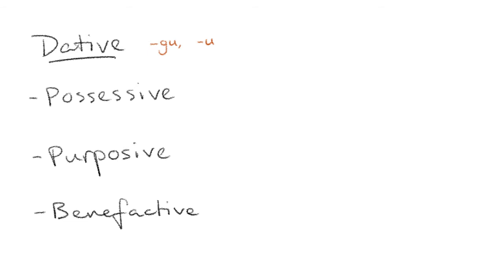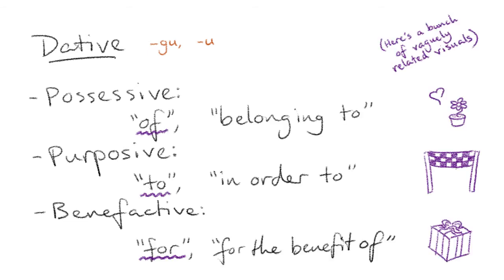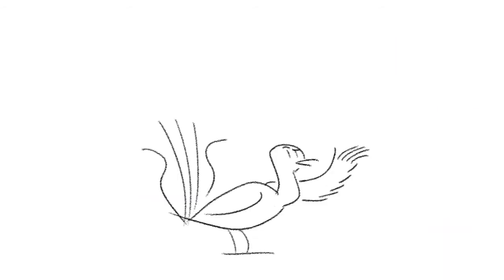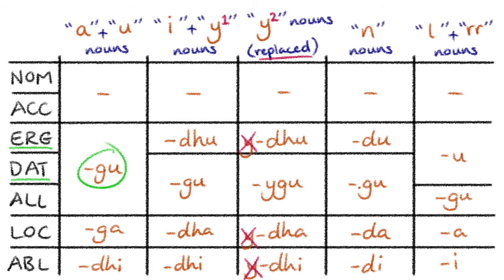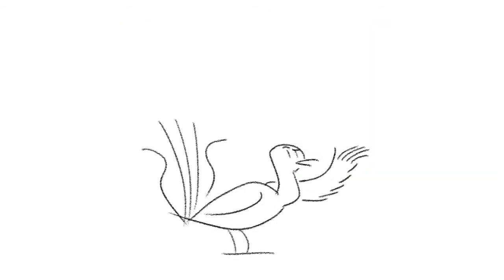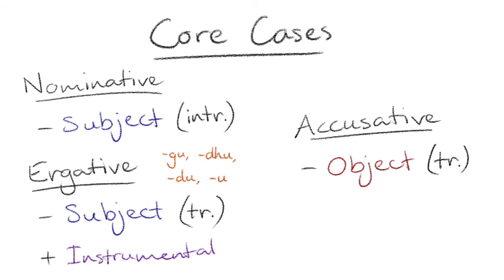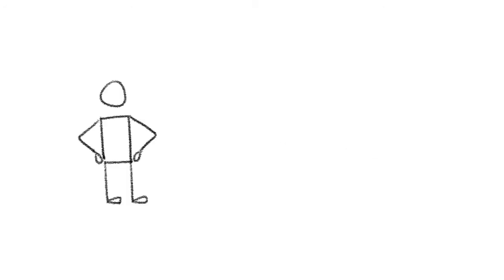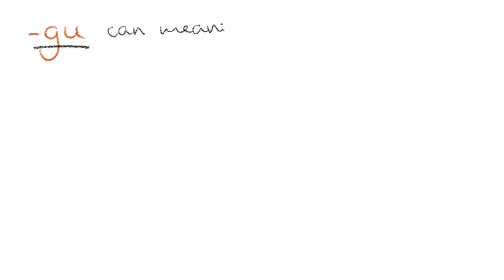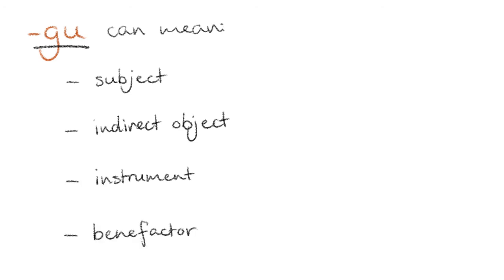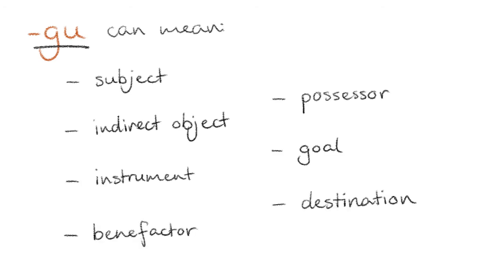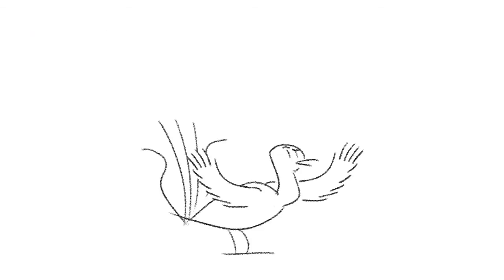The dative basically encompasses the meaning of the English prepositions 'of', 'to', or 'for', depending on context. It becomes even more context-dependent if the word in question has the same form for the dative, the ergative, and the allative case. In fact, there's quite a lot of overlap between those three cases — I wouldn't be surprised if they were all considered the same thing at one point in history. On top of that, the ergative also functions as an instrumental, which makes sense since both the subject and the instrument cause the action to occur. So a word ending in GU could be the subject, indirect object, instrument, benefactor, possessor, goal, and destination all rolled into one — you might as well call this a post-positional suffix.